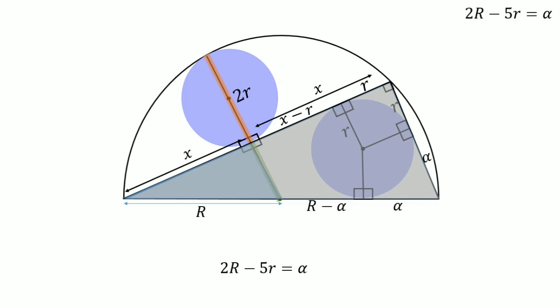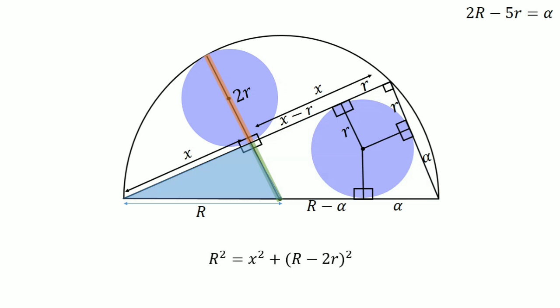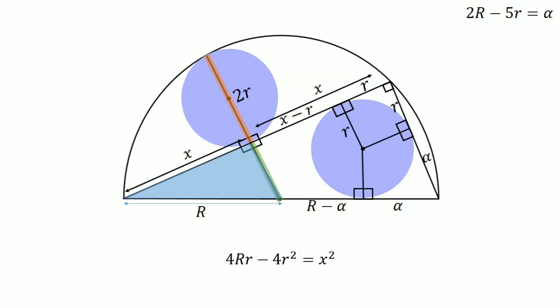Now using the Pythagorean theorem in our blue triangle: r squared equals x squared plus (R minus 2r) squared. Simplifying, and subtracting capital R squared from both sides, we get x squared equals 4R·r minus 4r squared. Writing this in the corner.